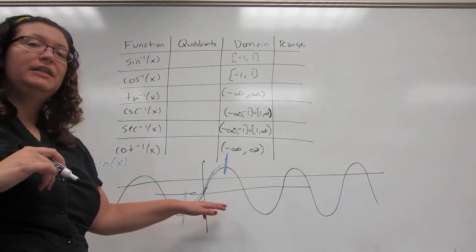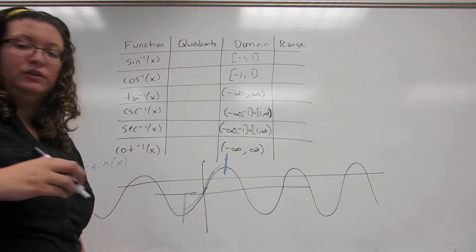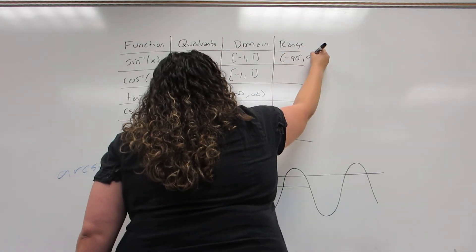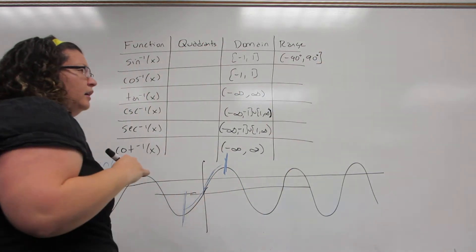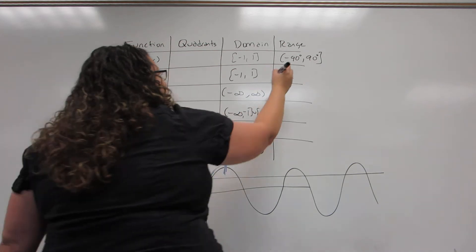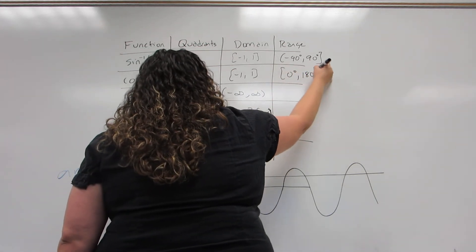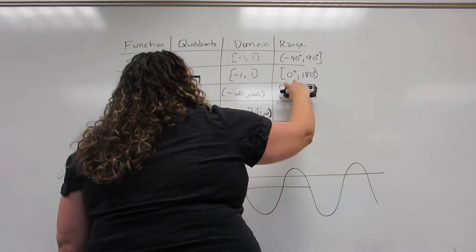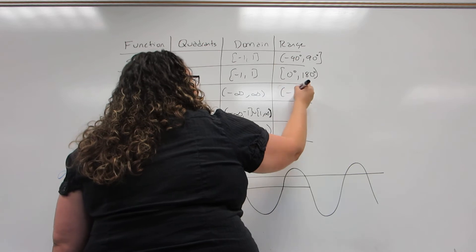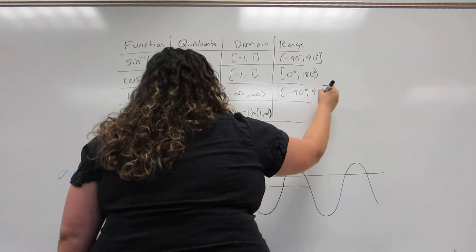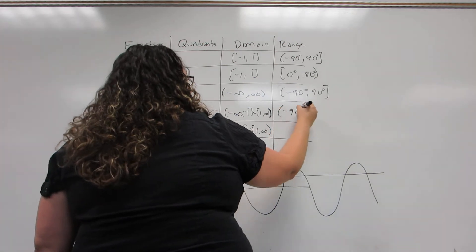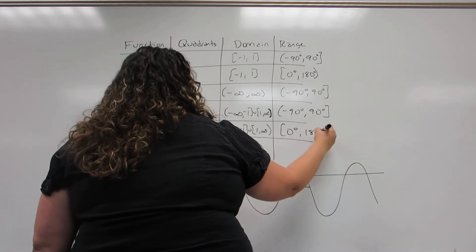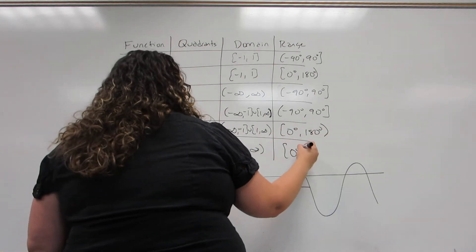So for sine, it was from this hump to this hump, which is minus 90 degrees to 90 degrees. For cosine, because it has a different graph, it's going to be 0 degrees to 180 degrees. For tangent, it's minus 90 to 90. For cosecant, it's minus 90 to 90. For secant, it's 0 to 180. And for cotangent, it's 0 to 180.